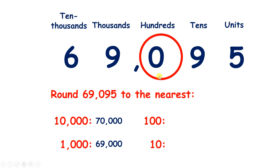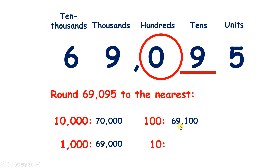To the nearest 100, if we look to the right we have a 9 — so we need to raise the score: that zero hundreds will become 100. Then if we put zeros to the right, that leaves us with 69,100.